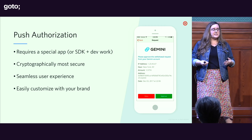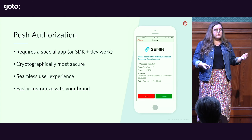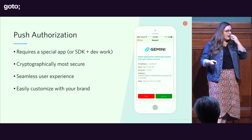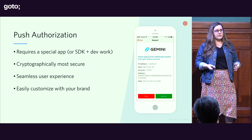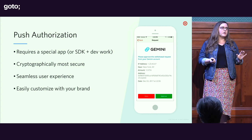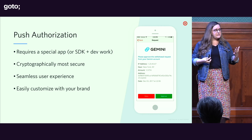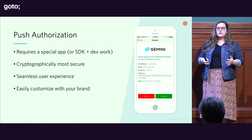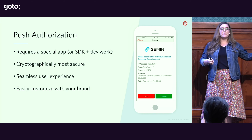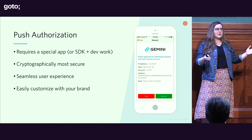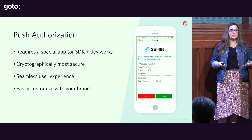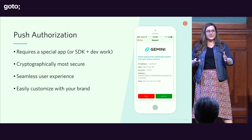The downside of push authorization is that it requires users to have an app — either a service like Duo, Google Prompt, or Authy, or an SDK built into your own application. For fintech companies like Robinhood, which are app-first, it's easy to expect all users have the app. But if you're a company that's been around more than ten years or has a website catering to users who might not have smartphones, your mileage may vary.